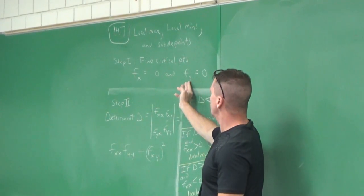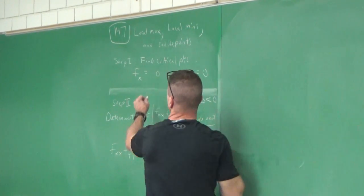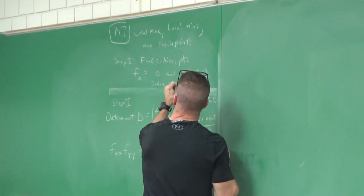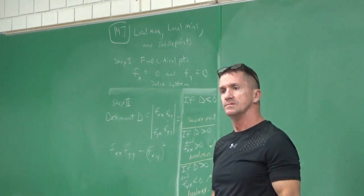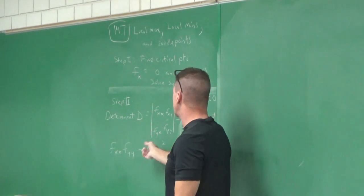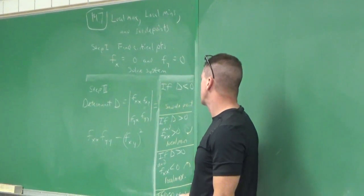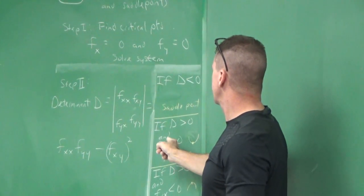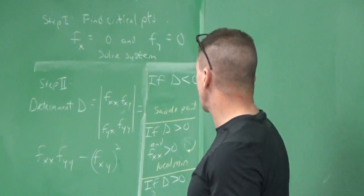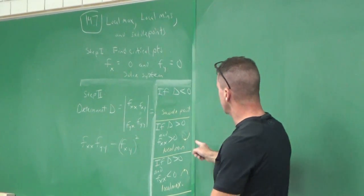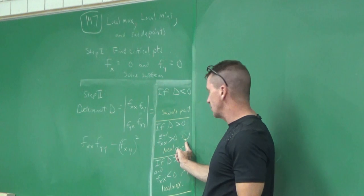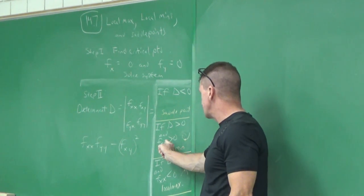We do step one: finding critical points. We'll set fx and fy equal to zero to solve the system. Once we solve that system, we can find the critical points. Then we'll use the determinant D to determine whether it's a saddle point, min, or max. It's a saddle point if the determinant is less than zero. It's a local min if the determinant is greater than zero and fxx is greater than zero. It's a local max if the determinant is greater than zero and fxx is less than zero.